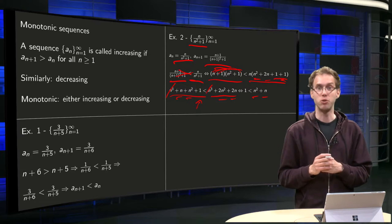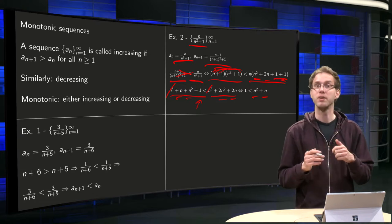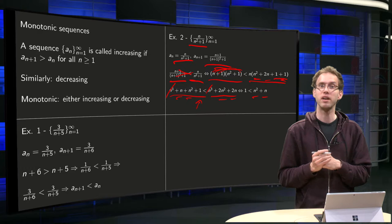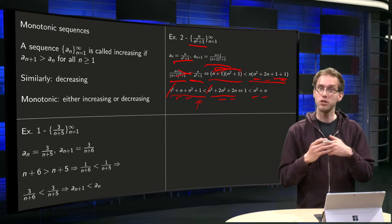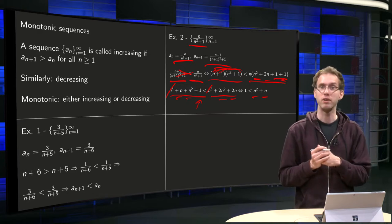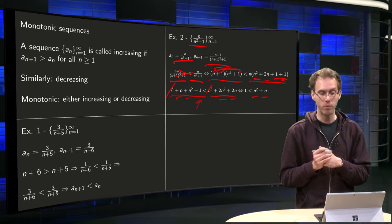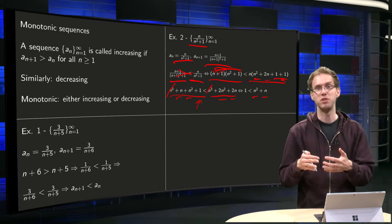So this last statement is true because n starts at 1, and n²+1 gets bigger and bigger. So n² + n is certainly bigger than 1 for all n, n bigger or equal to 1.